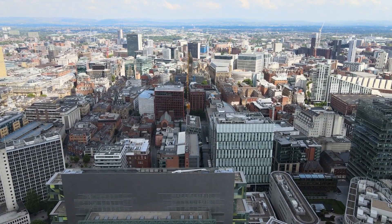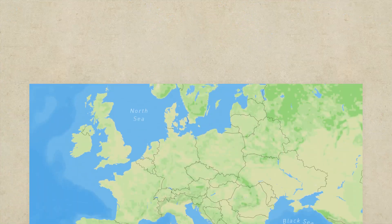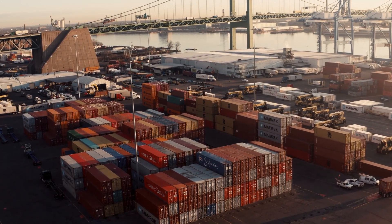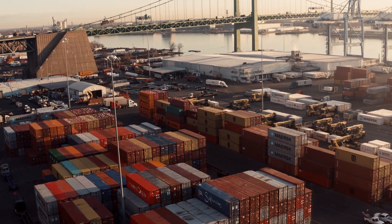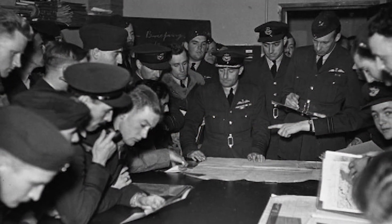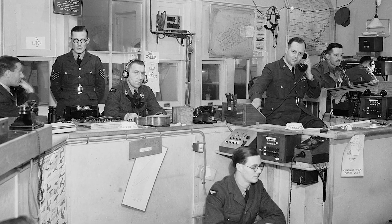One of the first problems that comes to mind is the unique geographic location of the United Kingdom. As you can see on the map, the United Kingdom is an island region separated from the mainland of Europe, surrounded by seas on all sides. One of the most important consequences of this is that the United Kingdom is isolated from its European neighbours, making it difficult to maintain close relations with other countries in the region, which may lead to misunderstandings and conflicts. For example, during World War II, Britain could not rely on its European allies for support and had to fight largely alone against Nazi Germany.